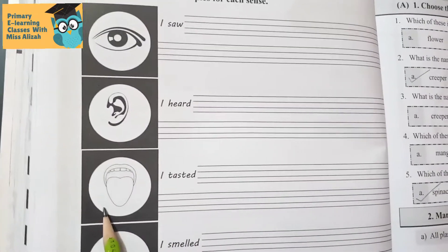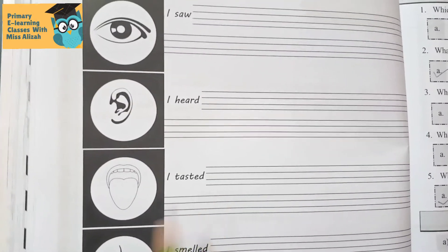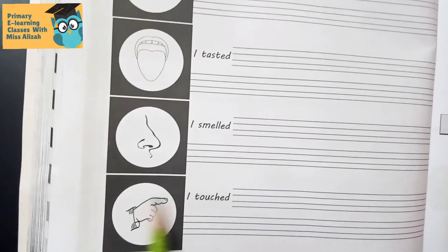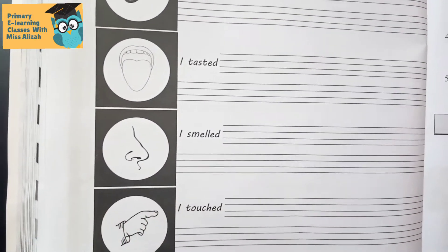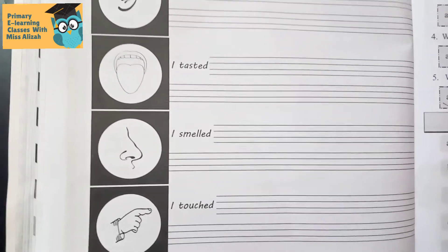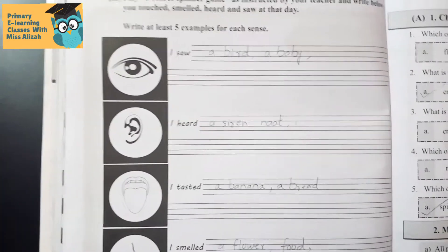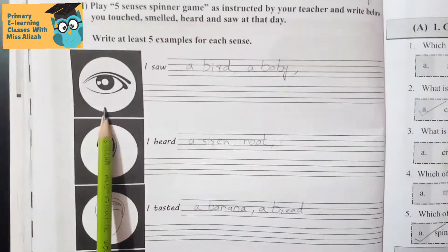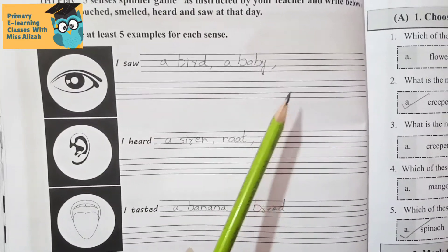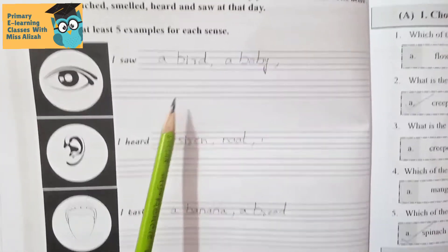Next, I tasted, then I smelled, and then I touched. Maybe I touched a plant or I touched a duster. As you can see, I have here two to three examples. Like I saw a bird, a baby. This way you have to complete five.